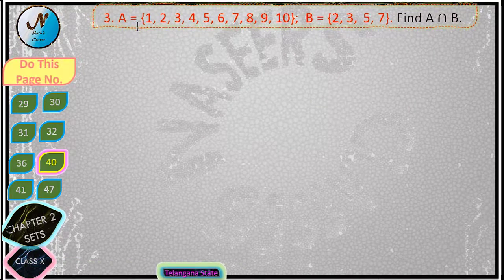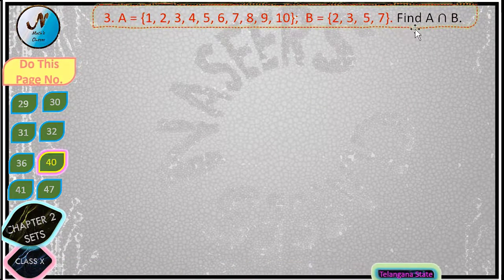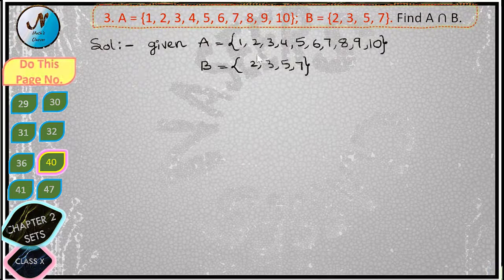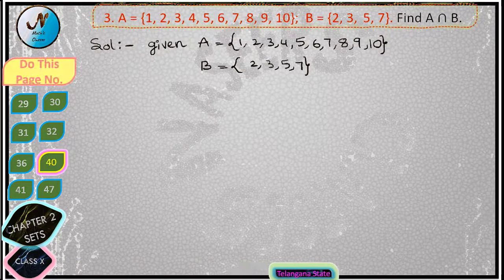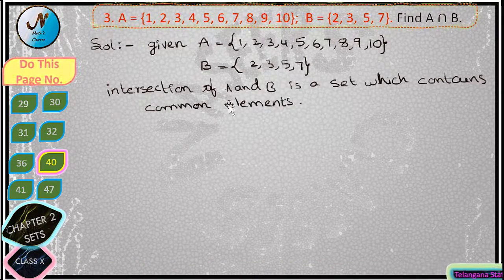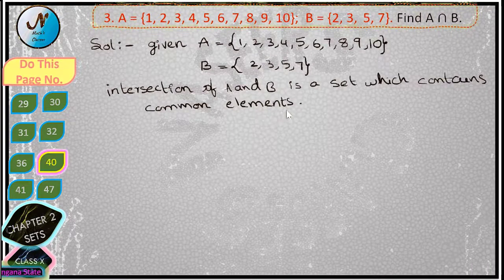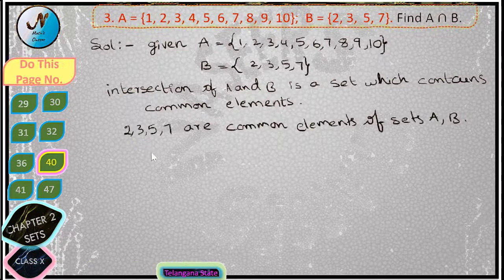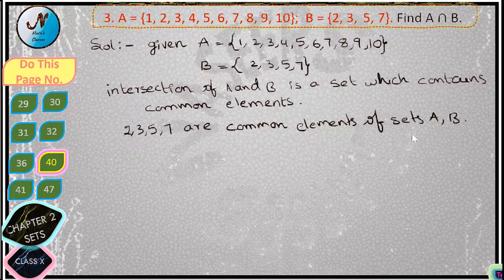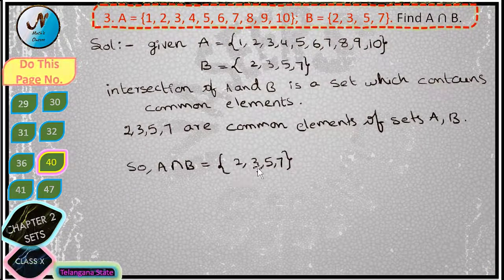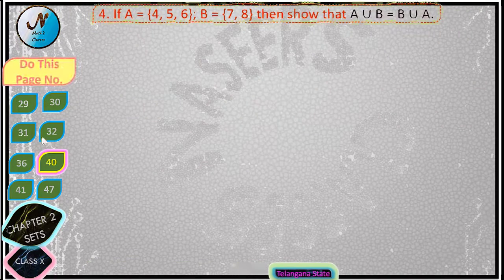Next we solve the third problem. Given two sets A and B, find A intersection B. A is equal to {1, 2, 3, 4, 5, 6, 7, 8, 9, 10} and B is equal to {2, 3, 5, 7}. We already know that the intersection of A and B is the set which contains common elements in both sets. From the given sets, 2, 3, 5, and 7 are the common elements, so A intersection B is equal to {2, 3, 5, 7}.